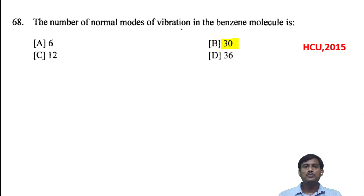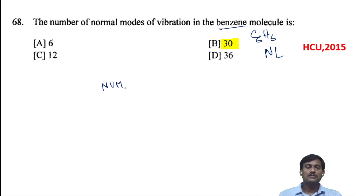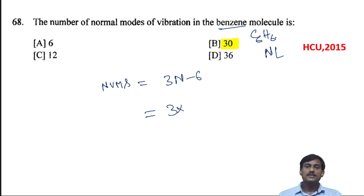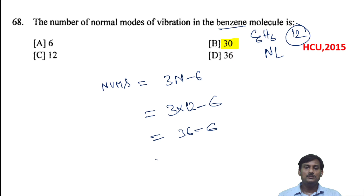The number of normal modes of vibration in benzene (C6H6): benzene is non-linear, so vibrational modes = 3N − 6 = 3(12) − 6 = 36 − 6 = 30. So B is the correct option.